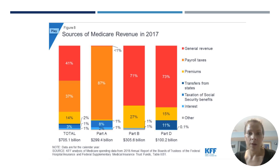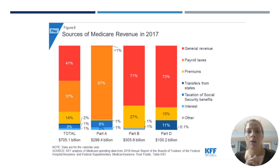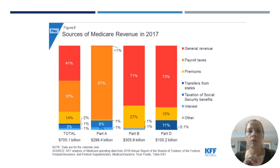Then we've got Part D, which covers drugs. Just 15% of Medicare Part D revenue is raised through premiums, and about 73% is raised through general funds transferred to CMS from the federal budget.